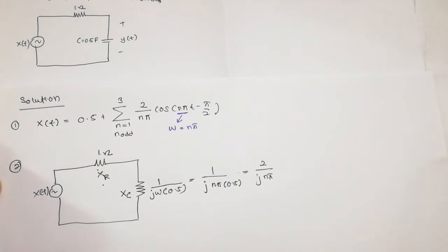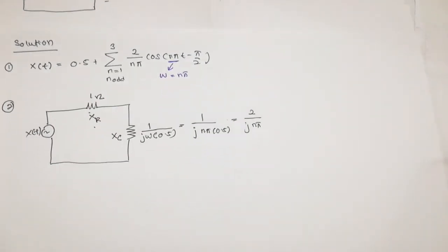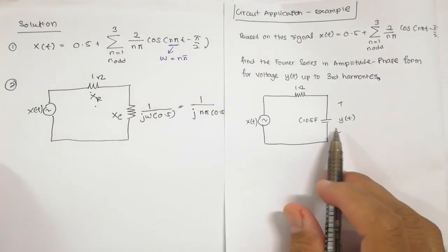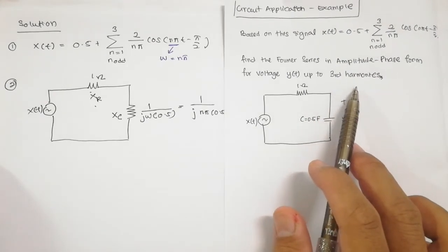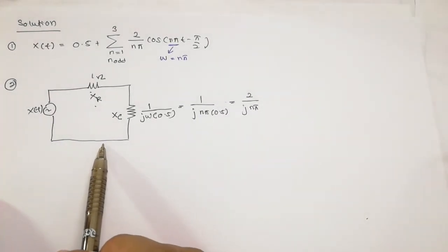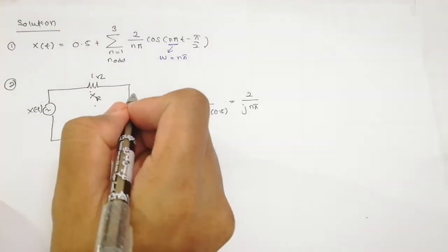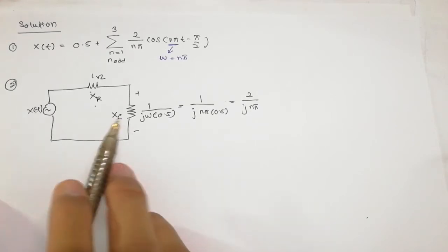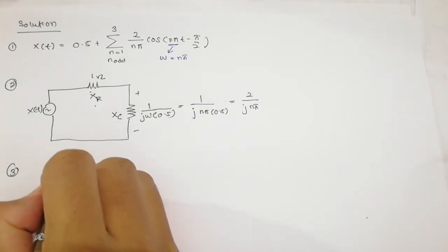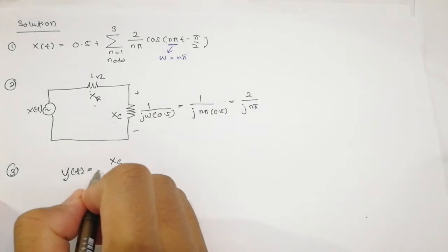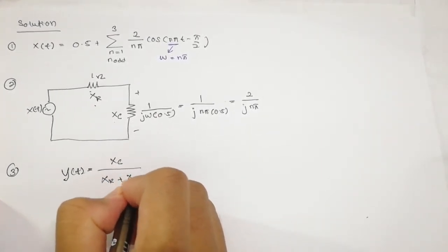Step 3: we need to find the response function we want, which is the voltage YT, considering up to the third harmonic. Since we want the voltage across XC, we use the voltage divider rule: YT = XC divided by (XR + XC), multiplied by the input XT. Plugging in the values: YT = (2 over j·N·pi) divided by (1 + 2 over j·N·pi), multiplied by XT.